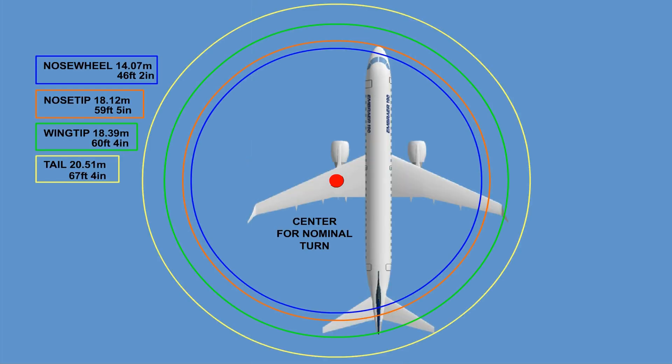Note that the largest clearance is required by the tail, which is not visible. In a maximum turn, either the left or the right main landing gear remains stationary, marking the center of the turn.